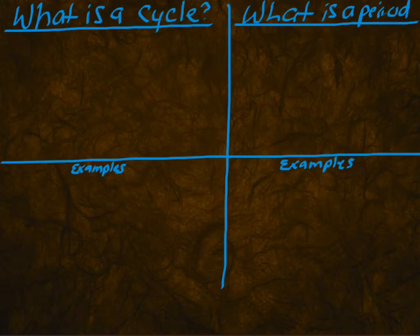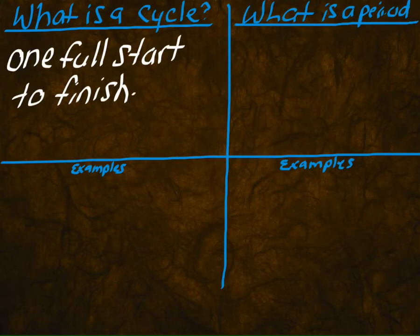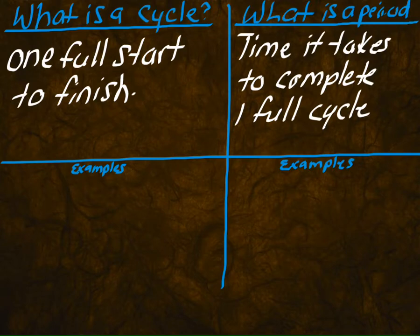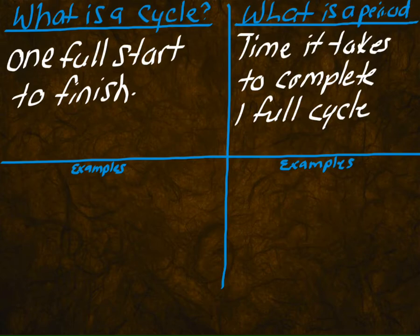So here are a couple of questions we actually had in our notes. The first one is: what is a cycle? A cycle is one full start to finish. And what is a period? They almost sound like the same thing. A period is the time it takes to complete one full cycle. How are these two different? A cycle is one full start to finish. A period is how long it takes to complete a cycle.